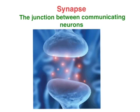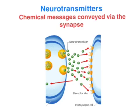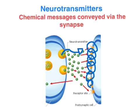Neurons don't actually touch each other — they communicate via neurotransmitters at a junction which we call the synaptic gap, synaptic cleft, or simply the synapse. Neurotransmitters are the key ingredient here: they're released from the axon terminal into the synaptic gap, and some of these will bind with specialized receptors on the dendrites of the post-synaptic neuron. That's how chemical messages are conveyed throughout the neural circuitry of the brain.